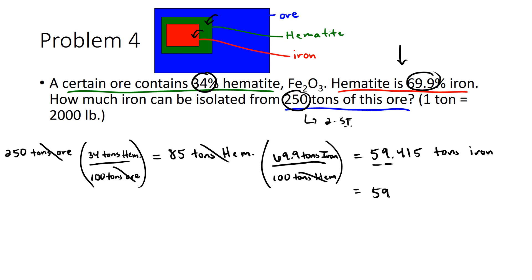And so for this problem, we're only going to be able to say that 59 tons of iron can be isolated from 250 tons of the ore. And that's how you do problem four. See you guys next time.